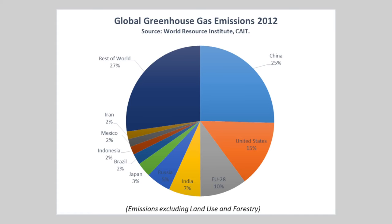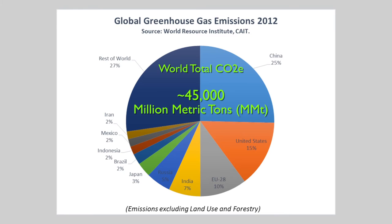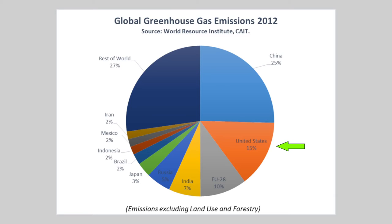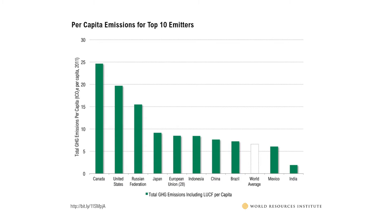Anthropogenic greenhouse gases are emitted by many sources and from every country. Together, these nations contribute a world total of 45,000 million metric tons of CO2 equivalents. This graph shows percentages of greenhouse gas emissions by country in 2012. The United States is currently the second highest emitter, contributing about 15% of the world total, while the highest emitting country is China. However, on a per capita basis, the US emits about 19 tons of CO2 equivalents per year per person, versus China at 7.5 tons per year per person.